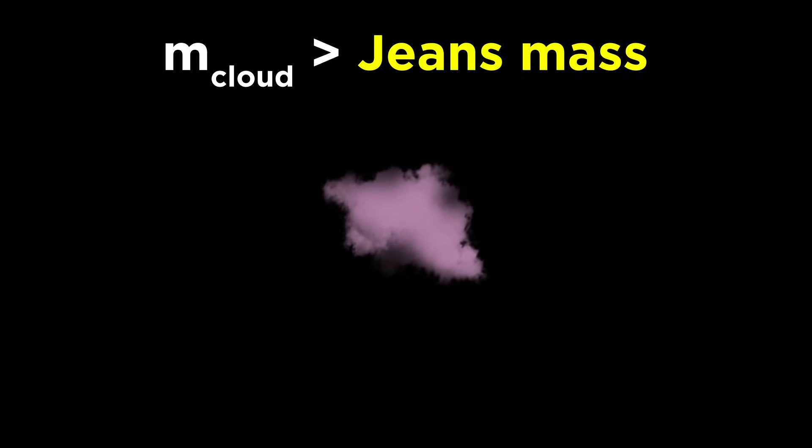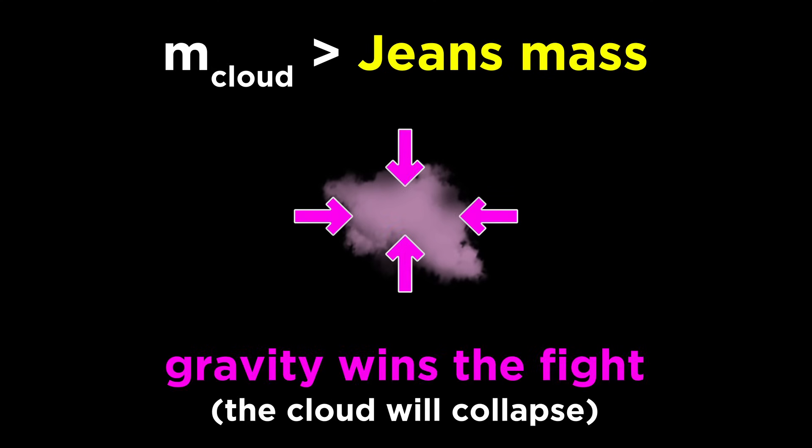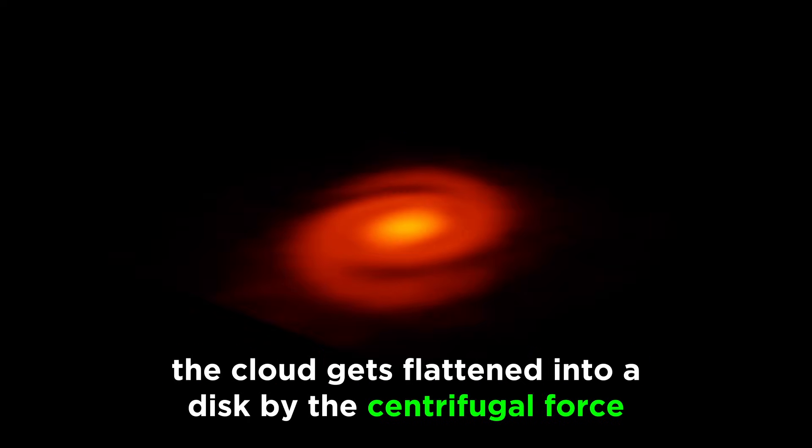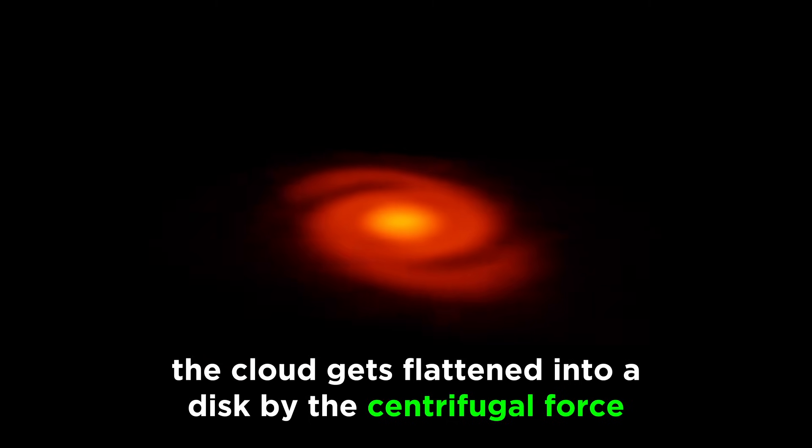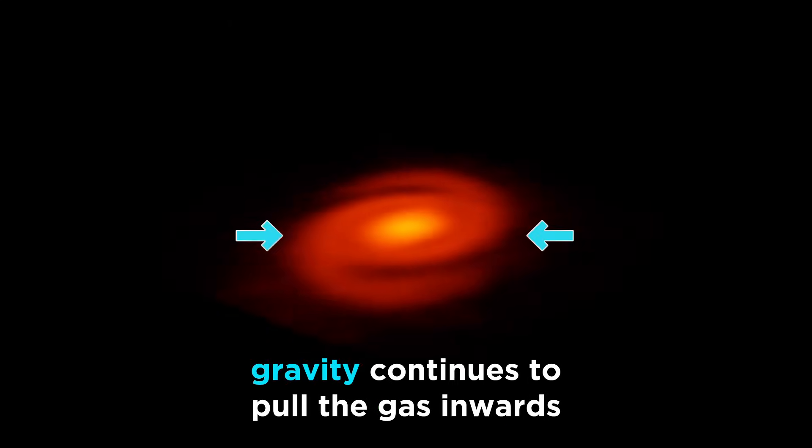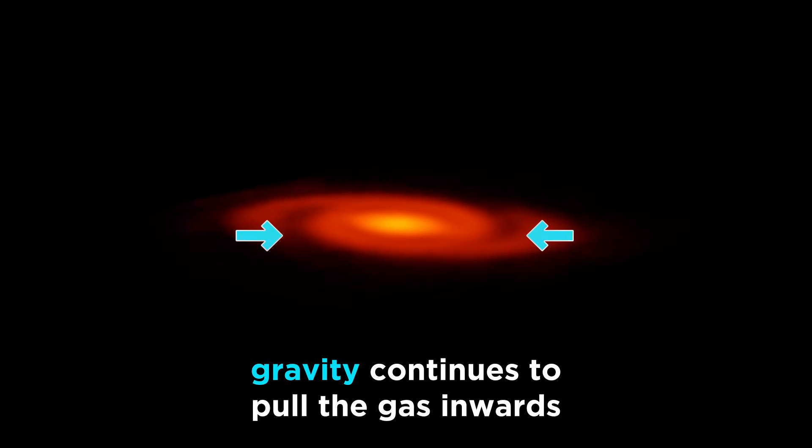But if a cloud is massive enough, above a threshold called the Jeans mass, which is usually at least a few thousand times more massive than our sun, gravity will easily win the shoving contest, and the minimal kinetic energy from the cold gas pushing out will not be enough to prevent gravitational collapse. Any net rotation is amplified as the cloud gets flattened into a disk by the centrifugal force, like a pizza chef spinning dough in the air, with gravity pulling matter towards the center of the disk.